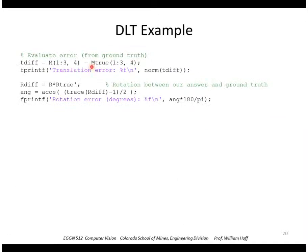So to apply that in our example, here's the computation of the translation error, taking the norm of that difference vector. Here we're computing the estimated rotation times the transpose of the true rotation. And that'll give us the difference, a rotation matrix that represents the difference between those two rotations. And then we use the formula on the previous slide to compute the angle about some axis that transforms one to the other.